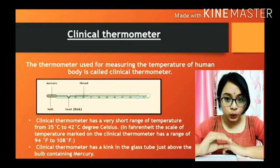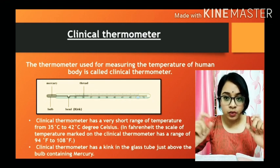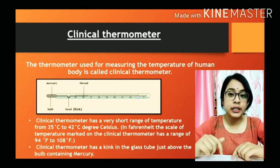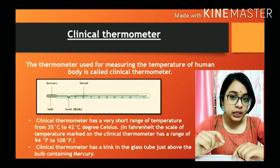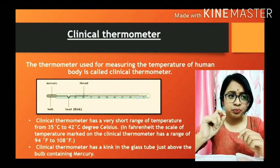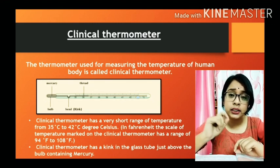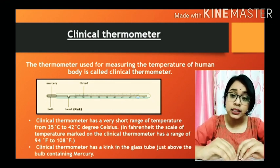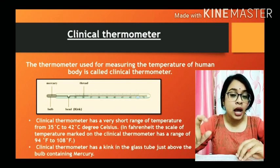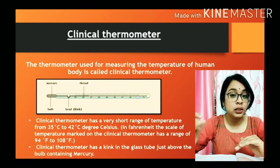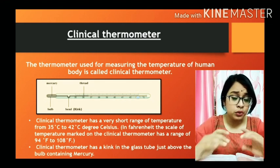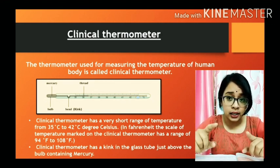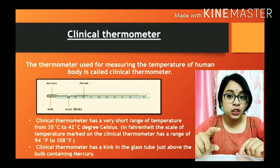If you see a clinical thermometer closely, you will find it is made up of a glass tube, and at the end of the tube there is a glass bulb. Mercury is present in that glass bulb, and if you look minutely you will see a very thin tube inside the thermometer. Whenever heat is applied on the bulb, the mercury expands and moves through that tube; where it stops shows the temperature of the object. You can also see in the picture that inside the glass tube there is a bend, and that bend is known as a kink.